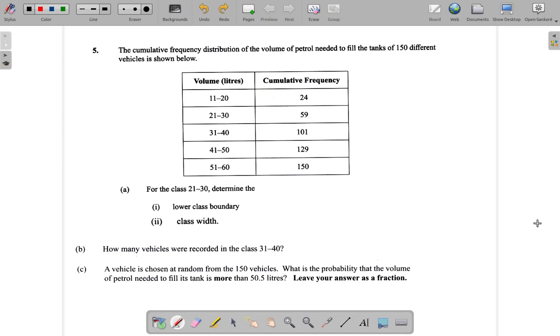Let's see. Here, 50.5 will be the upper boundary of this class before the 150. So as long as it is more than 50.5 litre, once it touches 50.5 litre up, you would put it in this class here.